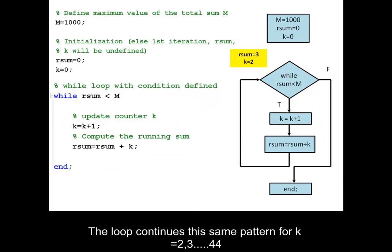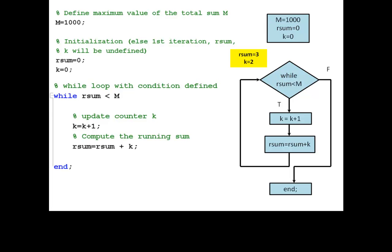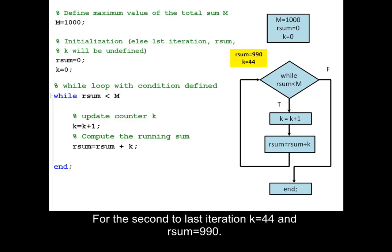The loop continues this same pattern for k equals 2, then 3, up to 44. For the second-to-last iteration, k equals 44 and rsum equals 990.